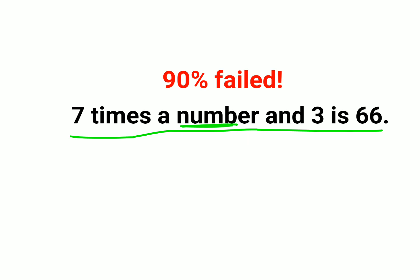So in this kind of scenario, first we will try to write it in mathematical form. 7 times means 7 into—let the number be A—and means basically addition 3, is equals to 66.